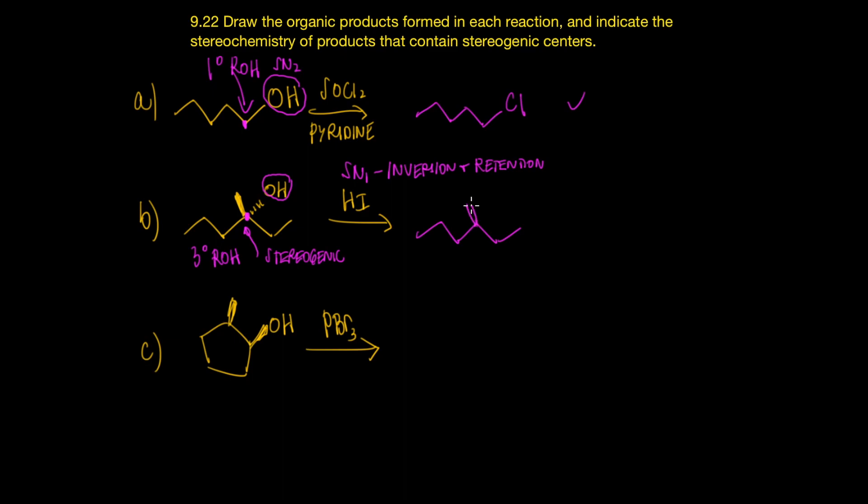This gives you both the wedge and dash isomers. So let's go ahead and draw the products here. I'm going to draw out the carbon chain there from left to right. I'm going to add the iodine in place of the hydroxyl group going back, and I will also add an iodine here, but I'm going to make it going on a wedge. So this is a wedge with iodine and the methyl group will be on a dash. So these are racemic.